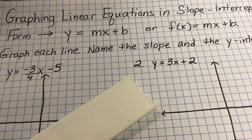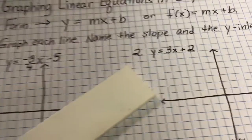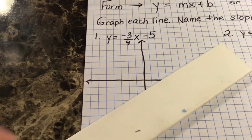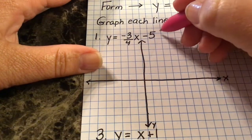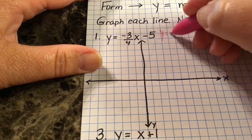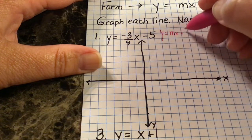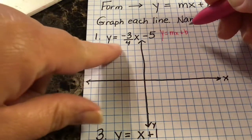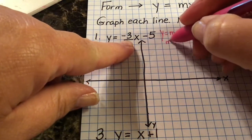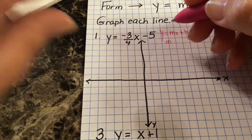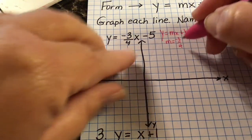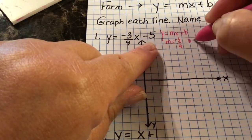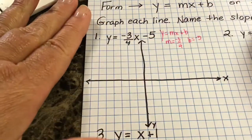You can do it either way, but it's hard to graph the line without knowing the slope and y-intercept. Looking at this equation using the form y equals mx plus b, my slope is negative three-fourths and my y-intercept is negative five.